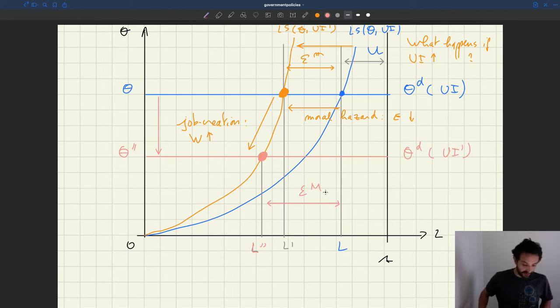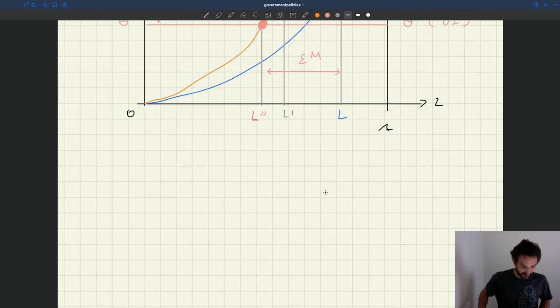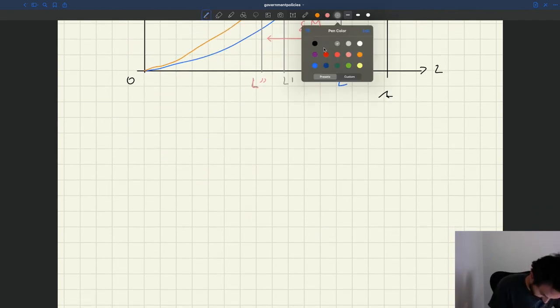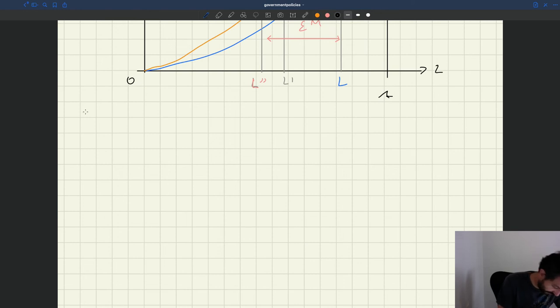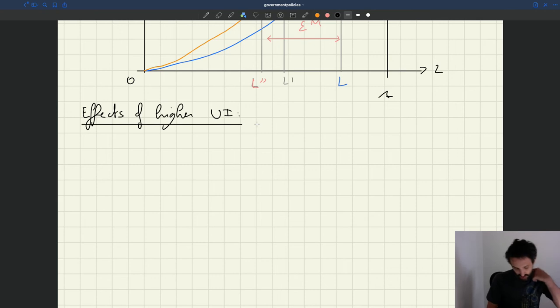So let's summarize all the effects that we've seen in this model. What have we seen? So first of all, of course, we've seen that, as in all the other models, when you increase UI, employment is going to drop and unemployment is going to increase. So that's true everywhere.